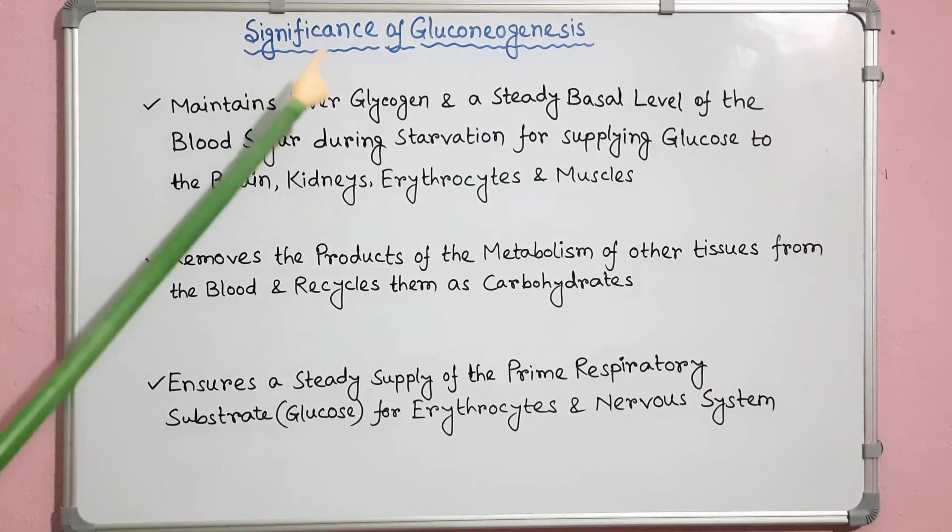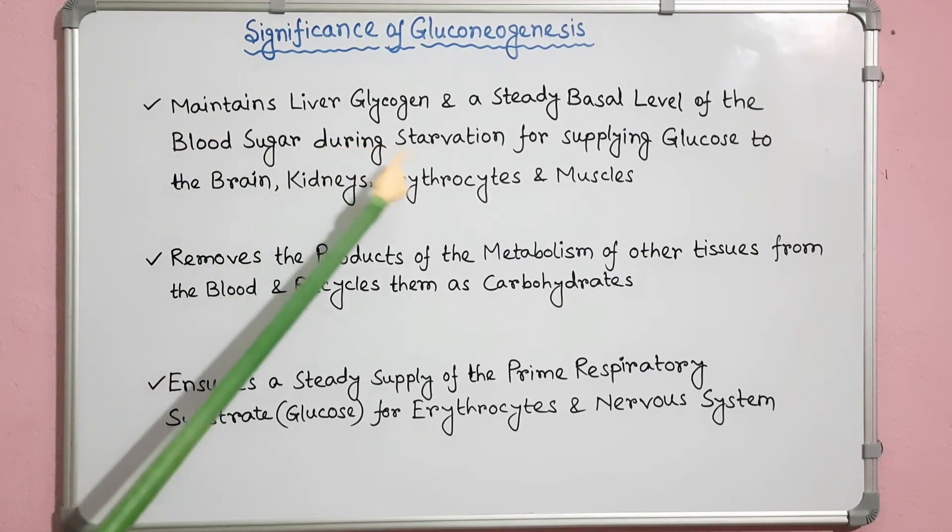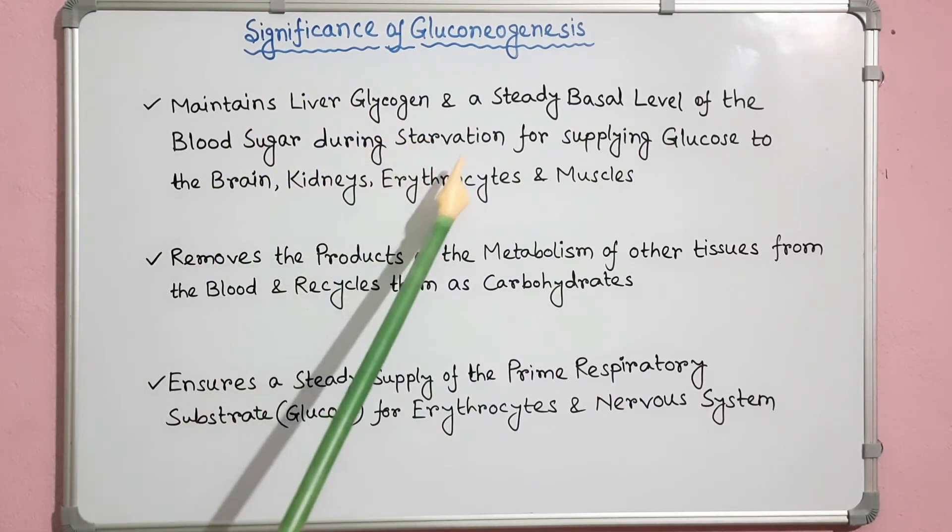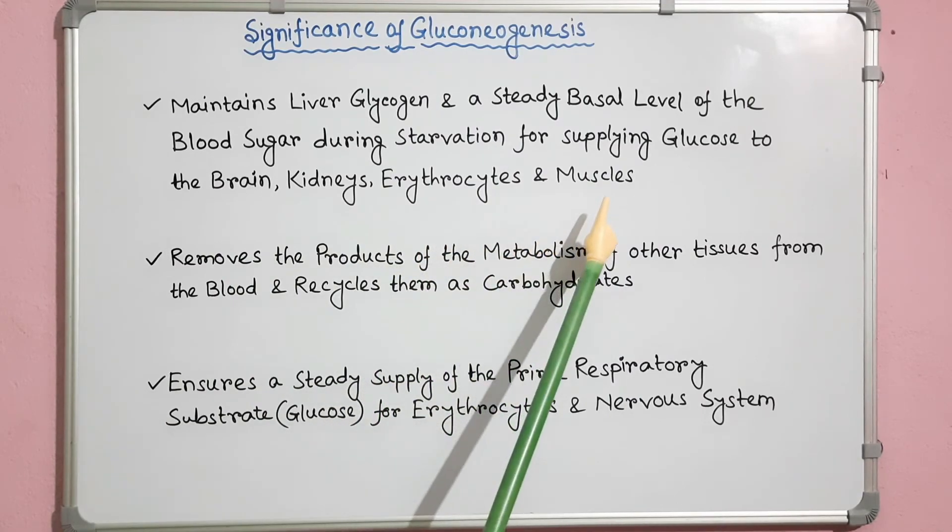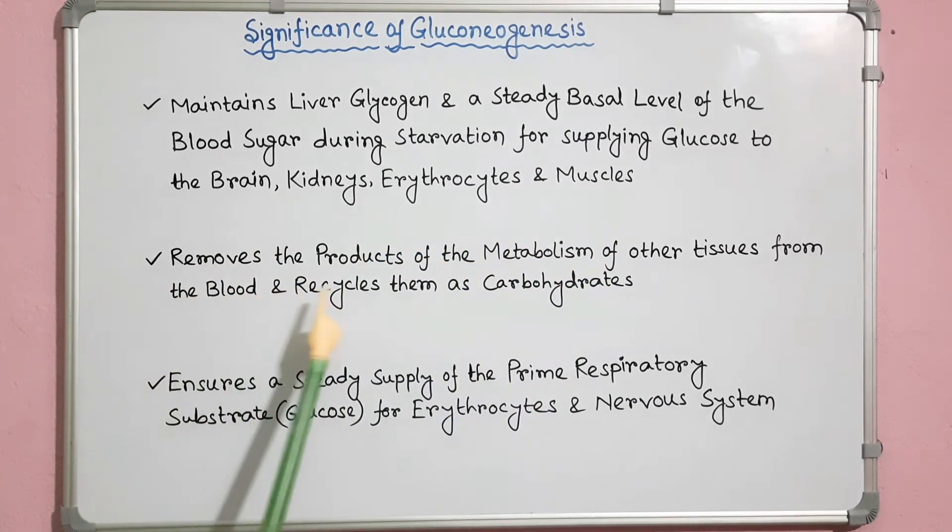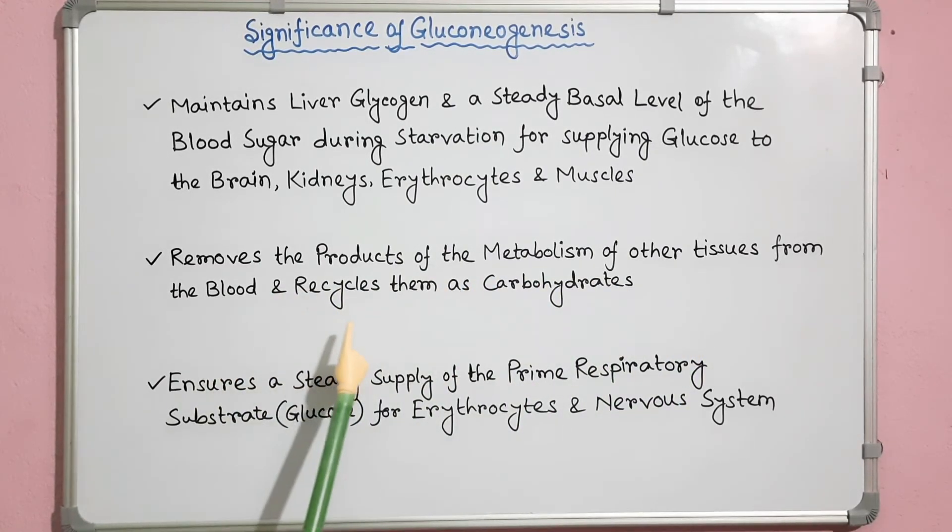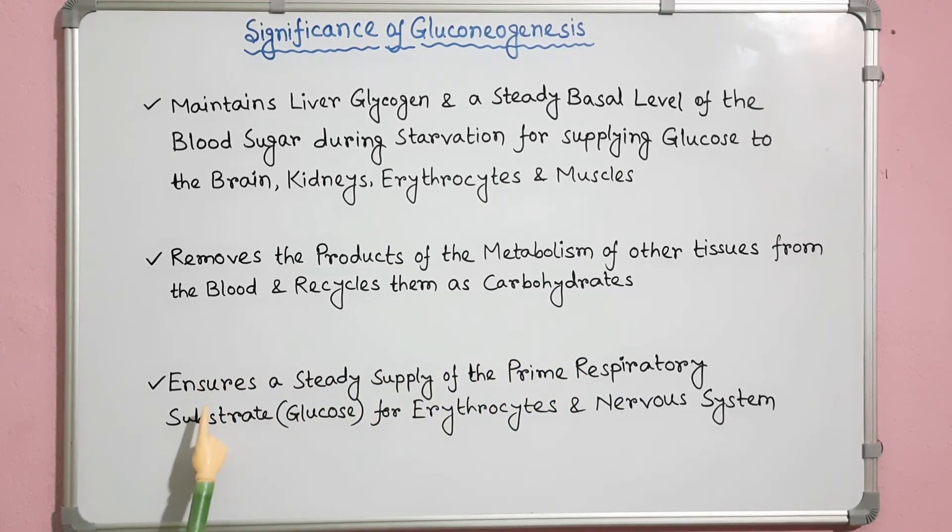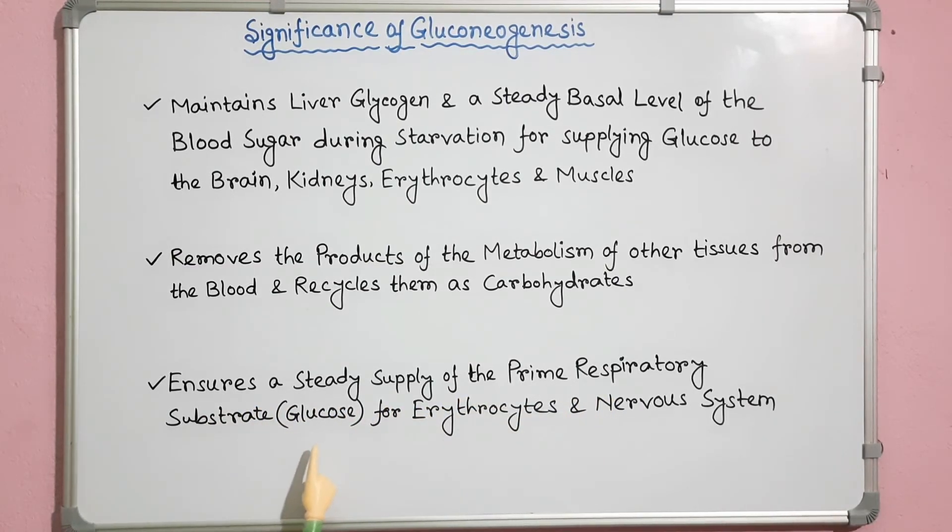Significance of gluconeogenesis: It maintains liver glycogen and a steady basal level of blood sugar during starvation for supplying glucose to the brain, kidneys, erythrocytes, and muscles. It removes the products of metabolism of other tissues from the blood and recycles them as carbohydrates. This process ensures a steady supply of the prime respiratory substrate glucose for erythrocytes and the nervous system.